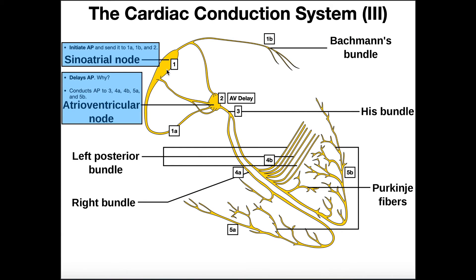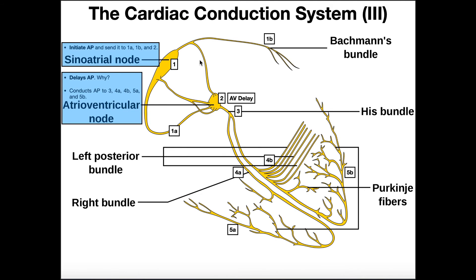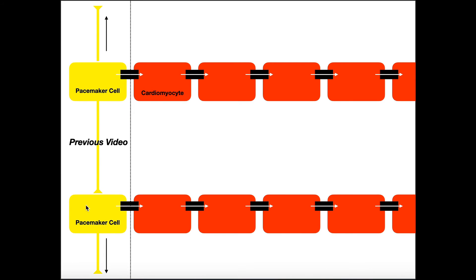For these cells of the heart that are generating action potentials, they have a pacemaker potential. The sinoatrial node would be the normal pacemaker of the heart, so it would have a pacemaker potential. And those pacemaker cells — that electrical conduction system of the heart — are spreading those action potentials all throughout the muscle of the heart in different areas.